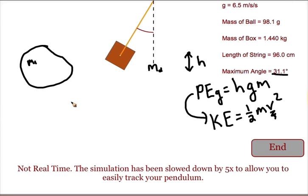Then we analyze the collision, and the collision is a momentum type of problem. So the momentum of the ball before the collision should equal the momentum of the ball and box after the collision.